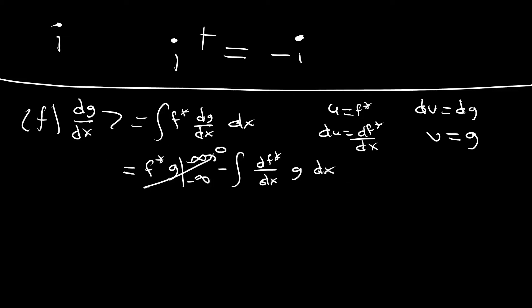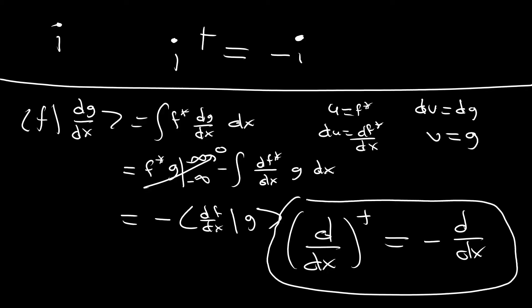This conveniently goes to zero because we're assuming that the solution is normalized or normalizable. So the limit as we go to either end is going to be zero. And so we're going to be left with minus bra df dx ket g. And since this has to be equivalent to this, based on our rules for Hermitian conjugates, d by dx dagger has to equal minus d by dx. So that's our solution to the last part of part A.